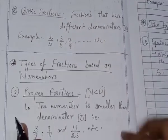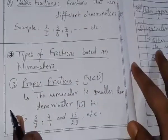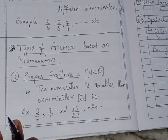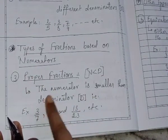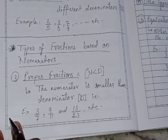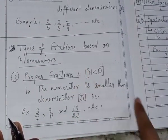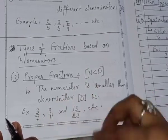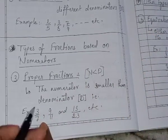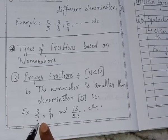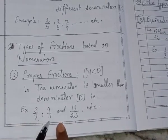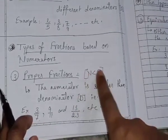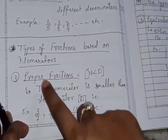Now we will study types of fractions based on numerator. Based on numerator, there are two fractions: proper fraction and improper fraction. The third type is proper fraction — the numerator is smaller than the denominator. For example, 3 by 7, 9 by 11, and 13 by 23. You can see that 3 is smaller than 7, 9 is smaller than 11, and 13 is smaller than 23. That's why these fractions are called proper fractions.